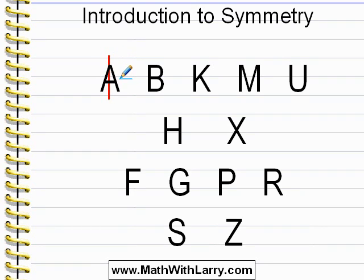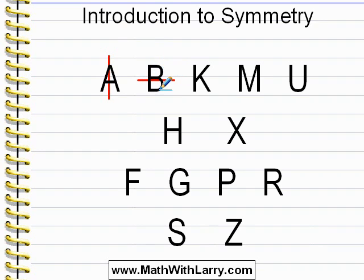Or stated another way, if I fold the shape in half along the vertical line, the left half will fold directly on top of the right half. The letter B has horizontal line symmetry — the top half is the mirror image of the bottom half. This letter K may not be drawn exactly perfectly, but the general gist is the top half is the mirror image of the bottom half. It has horizontal line symmetry.